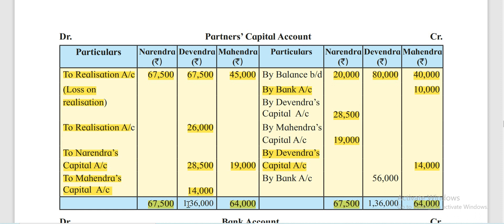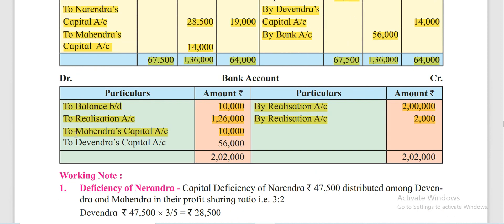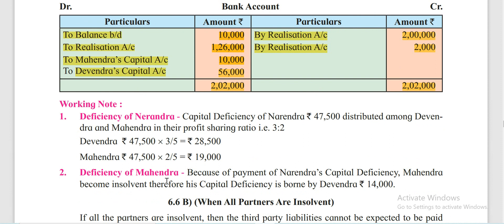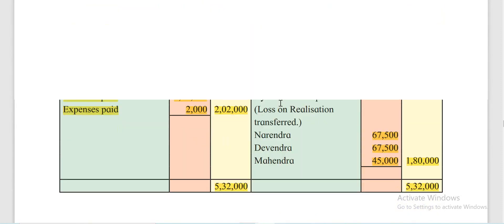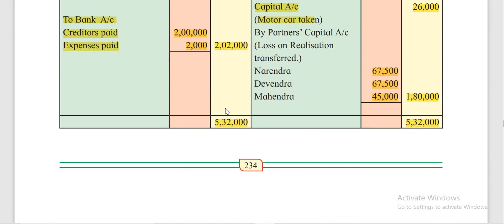Devendra's account total is Rs 1,36,000, and the remaining balance of Rs 56,000 is shown by Bank Account — so Rs 56,000 is credited to Devendra's capital account and the bank account tallies. The deficiency of Mahendra arose because of the payment of Narendra's capital deficiency, making Mahendra insolvent. Therefore, his capital deficiency of Rs 14,000 is borne by Devendra. This is how the two-partner insolvency problem is solved — try to solve it yourself.